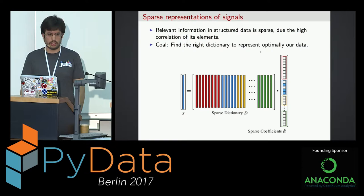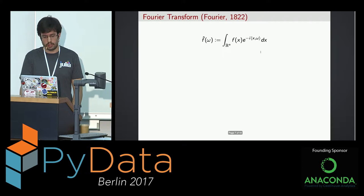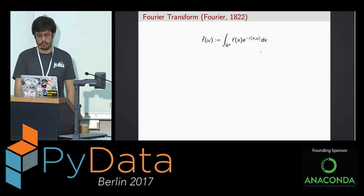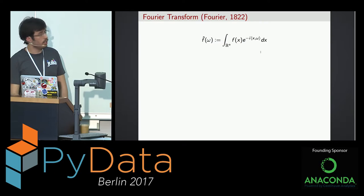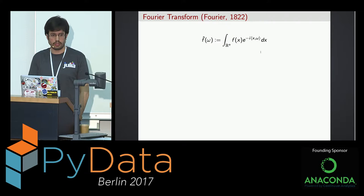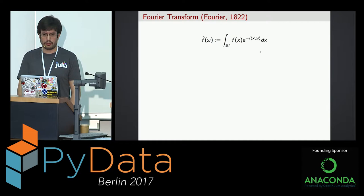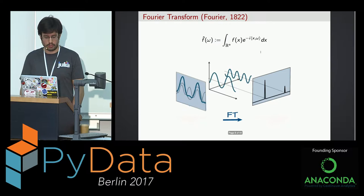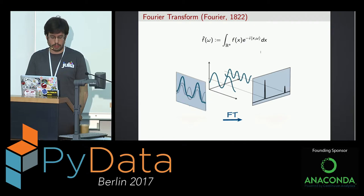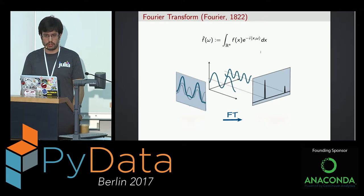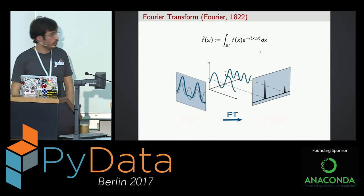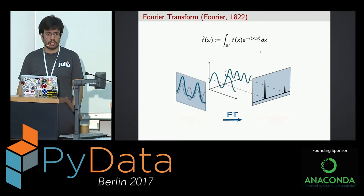Along history, there have been different attempts to represent the most general signals sparsely. The first known one is the Fourier transform, proposed by Joseph Fourier, a French mathematician, in 1822. He showed that certain functions can be optimally represented as a sum of cosine and sine functions, and the resulting variable is considered as the frequency. For example, a function that is a sum of cosines and sines will have a quite sparse representation — you will just have, say, two frequencies.